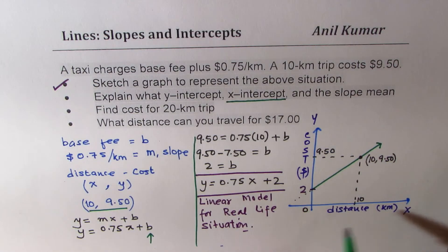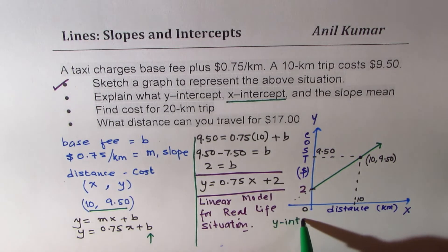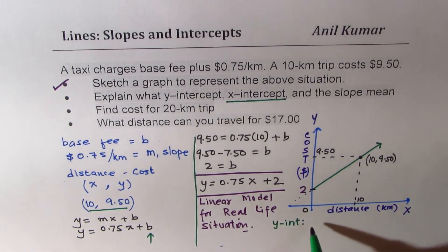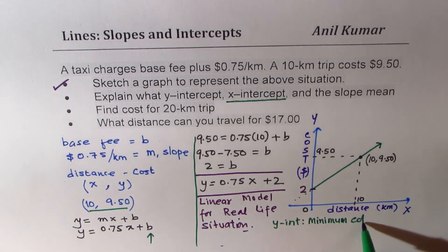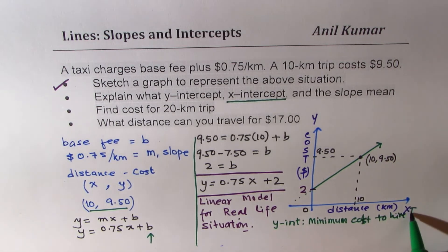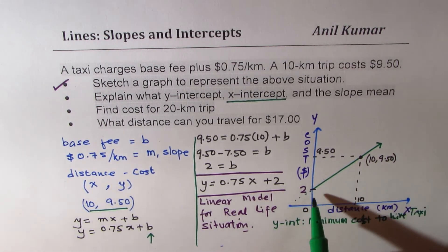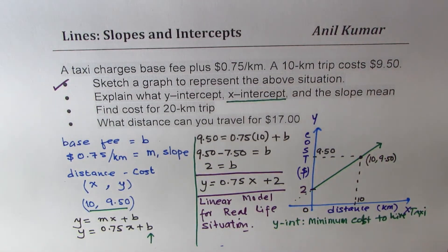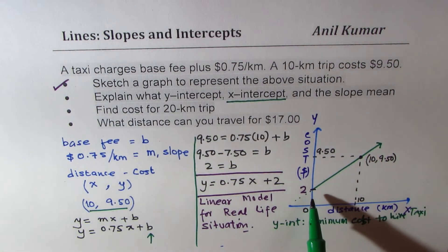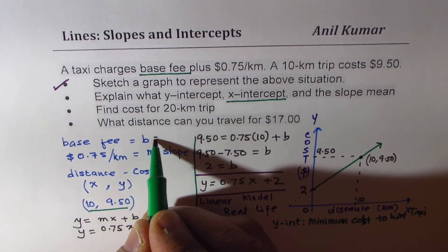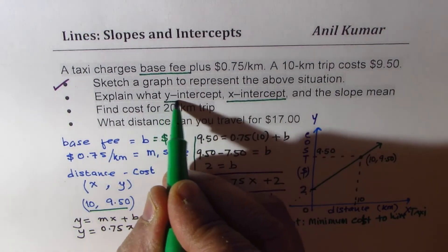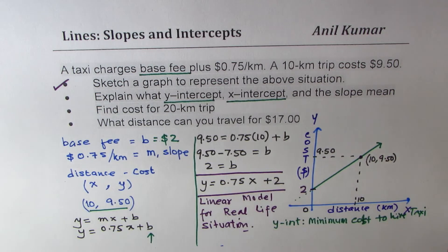Which is $2. So that y-intercept means what here? Y-intercept means the minimum cost to hire a taxi. So whether you go this distance or not, as soon as you sit there, you have to pay a minimum cost of $2. That is the base fee. That is what y-intercept means.